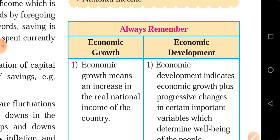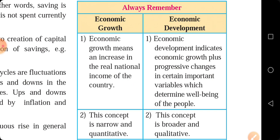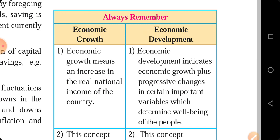Whereas economic development is a deliberate activity — it is human-made. Just as our height is a natural factor, our development is in our hands. If we study, development happens; if we stop studying, development will not happen. So it is a human-made factor. Economic growth means an increase in the real national income of the country. Real national income depends upon the level of productivity of the country, and it indicates the condition of economic growth.